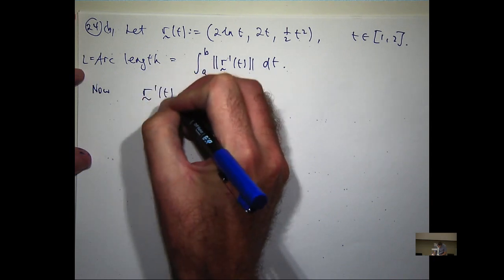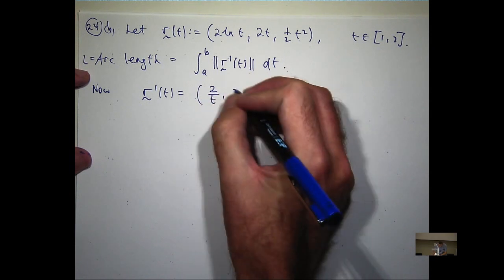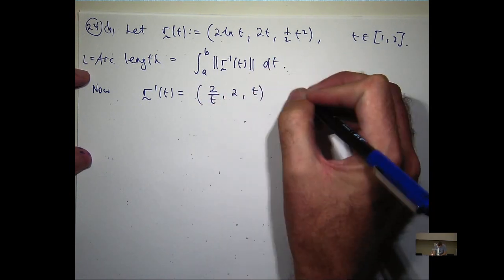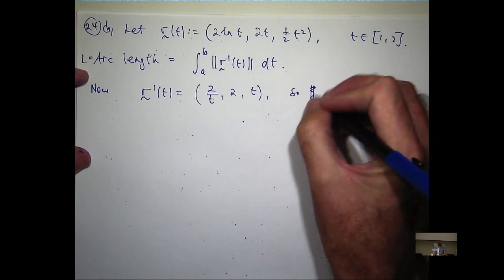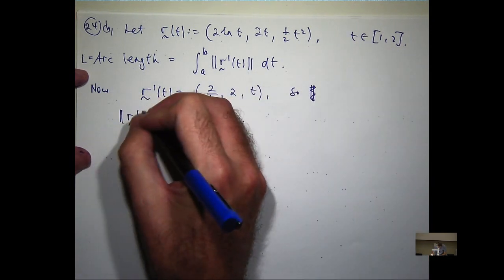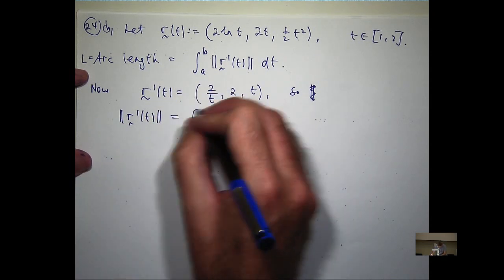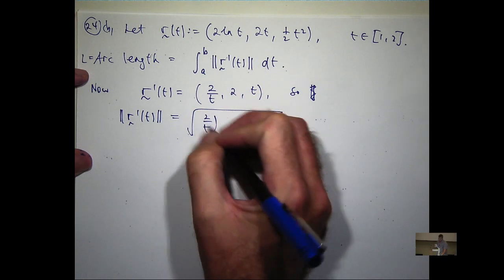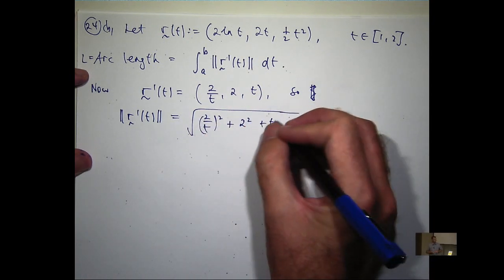So let's calculate the derivative. It's going to be 2 over t, 2, and t. So the magnitude of that vector function is just each component squared added together.